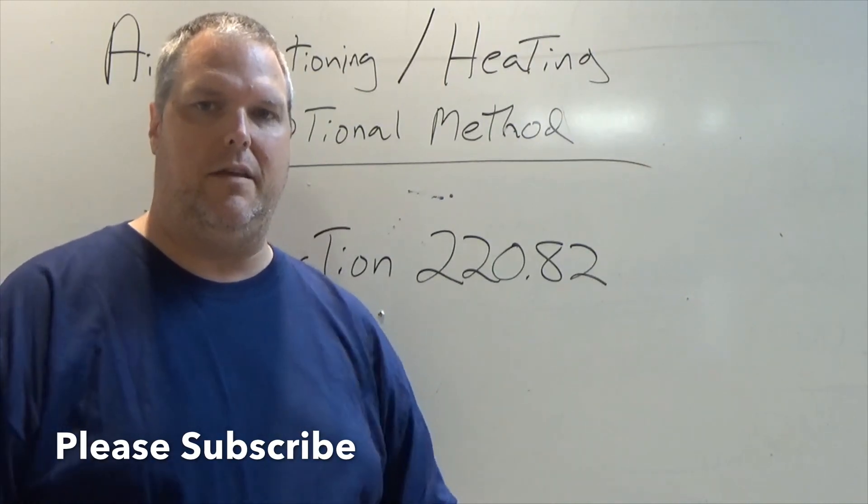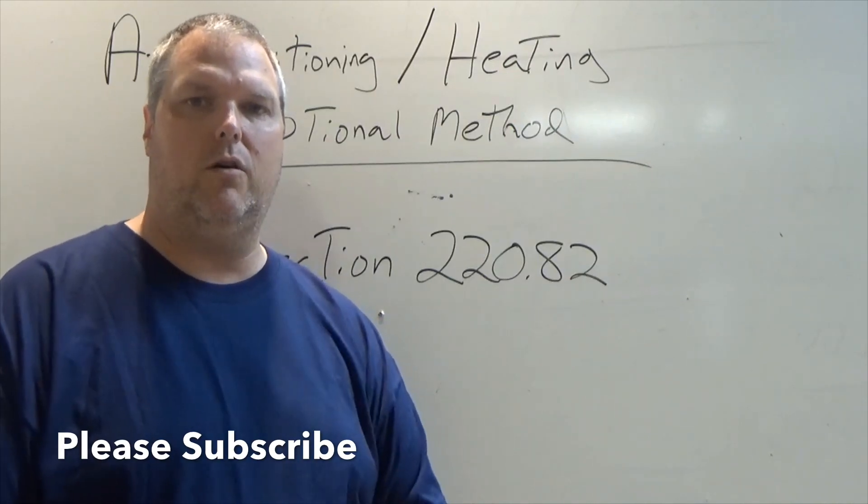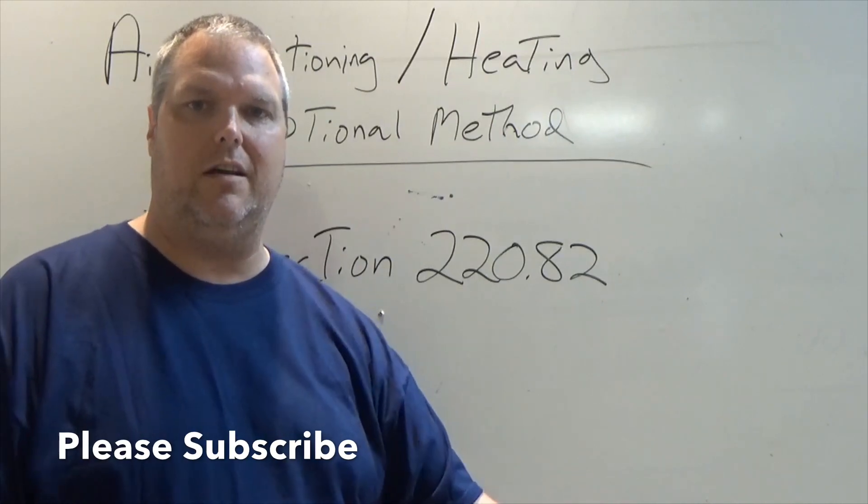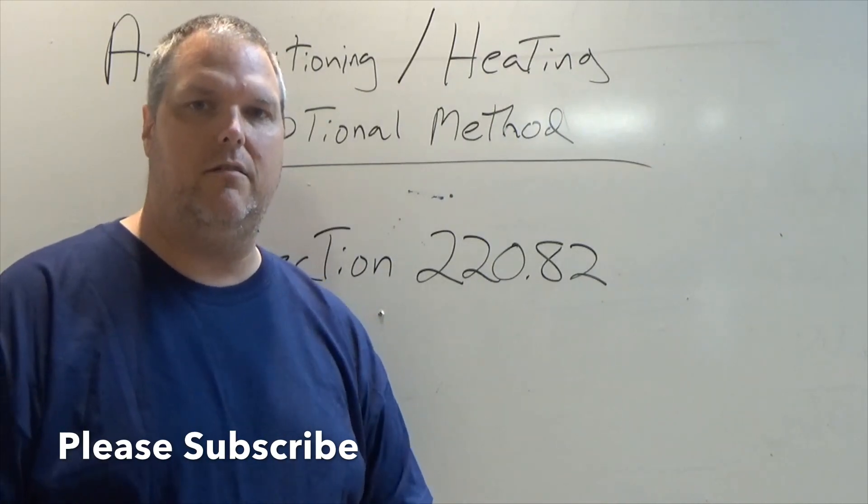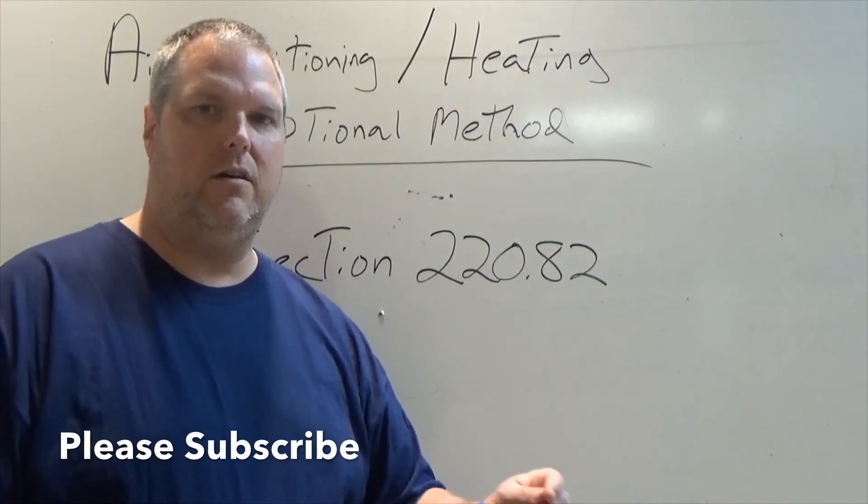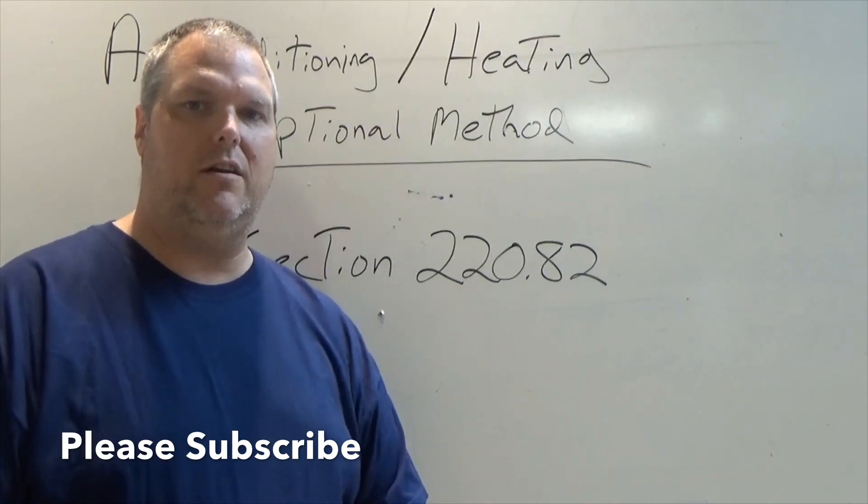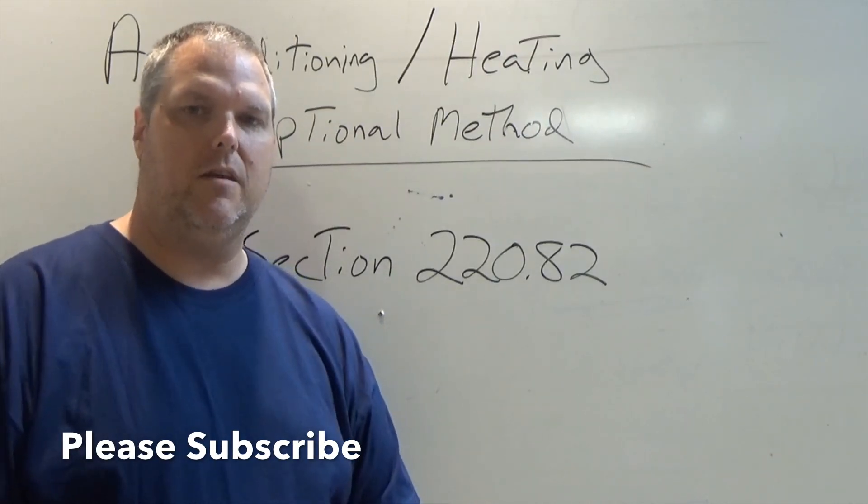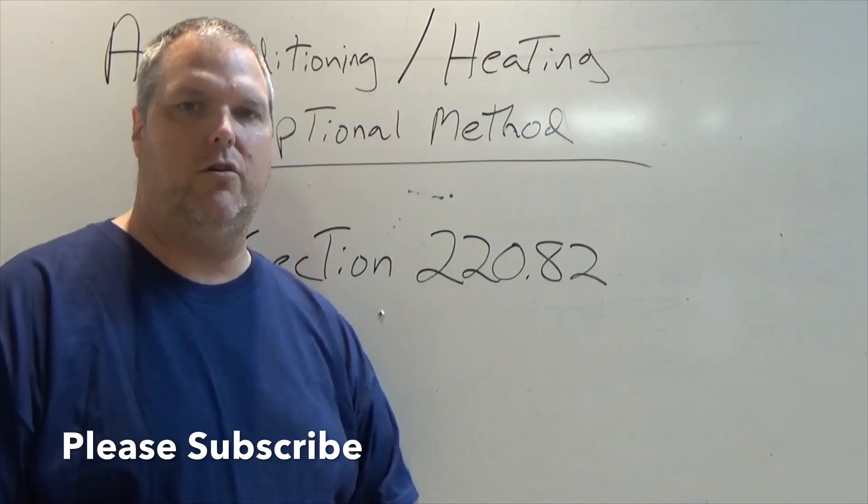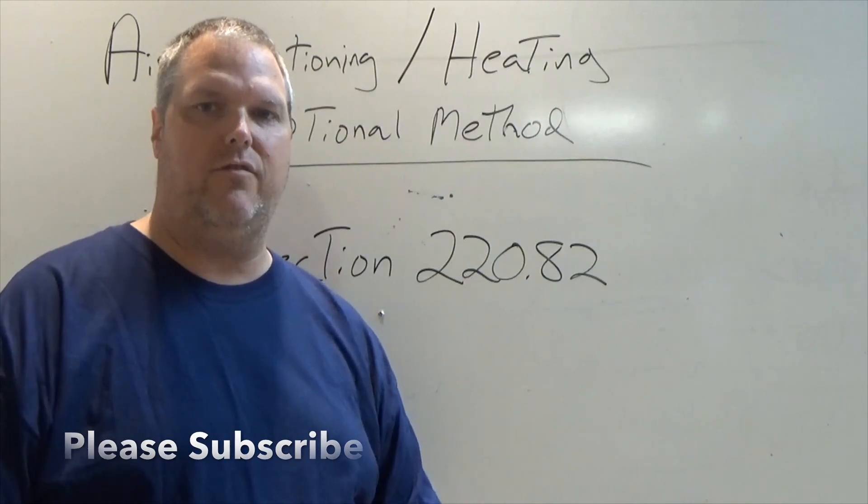What we're going to do today is discuss the different parts. Air conditioning is going to be the same. You're going to take your compressor motor. If you have a blower or an air handler that is used with heating, you also have to calculate that just like you would in the standard method. In the optional method, you're going to take the same information and use the air conditioning at a hundred percent.